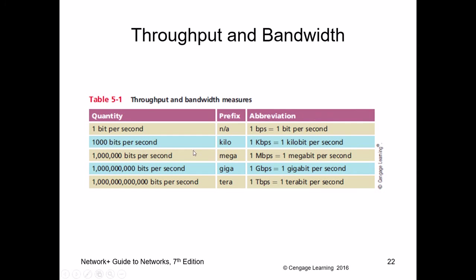For digital data throughput units: kilo is a thousand, mega is a million, giga is a billion, and tera is a trillion. The letters K, M, G, and T should be capitalized. The 'b' for bits should be lowercase — if you write a capital B, everyone will interpret that as bytes, not bits, and a byte is 8 bits. So make sure when writing throughput or bandwidth, units are lowercase except the first multiplier letter.